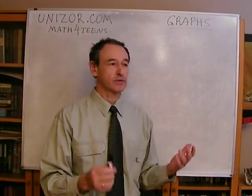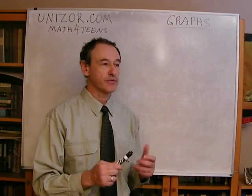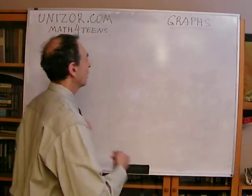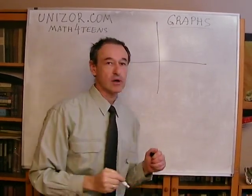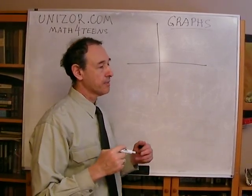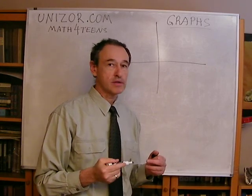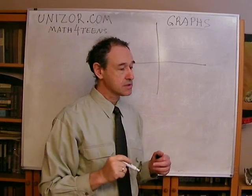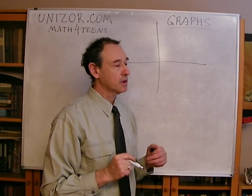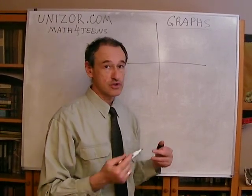Why planes and why real numbers? For a very simple reason. On the plane, we can very easily construct a graphical representation of a function which has domain and codomain as real numbers. Imagine you have two perpendicular straight lines on the plane — in this case, the board. I will associate this horizontal line with real numbers, and you know that points on a line correspond to real numbers quite easily. So I will associate every point on this line with the domain of real numbers for the function.